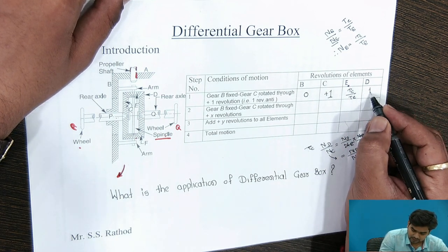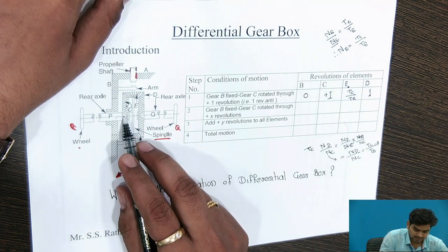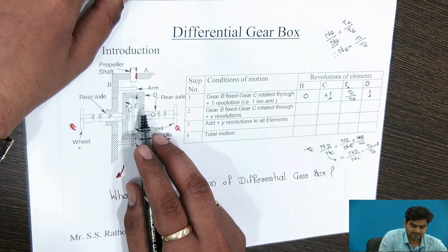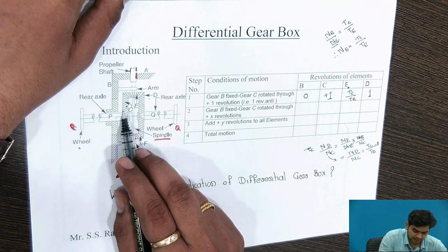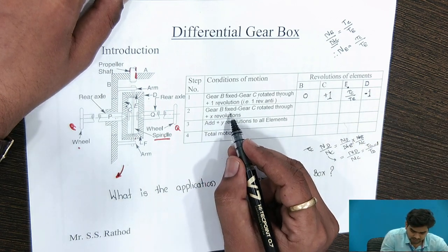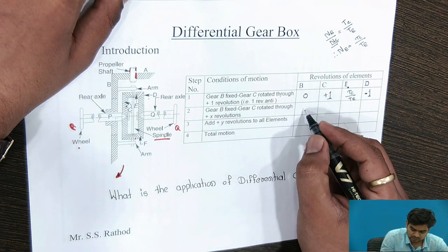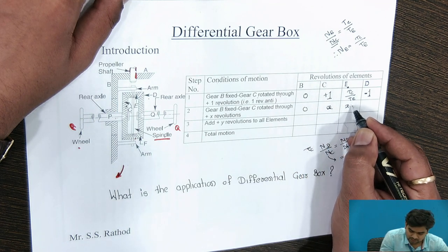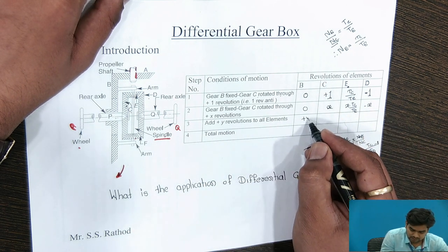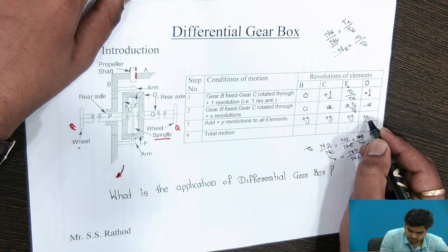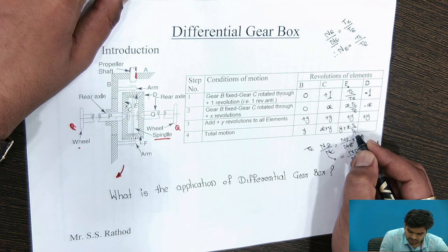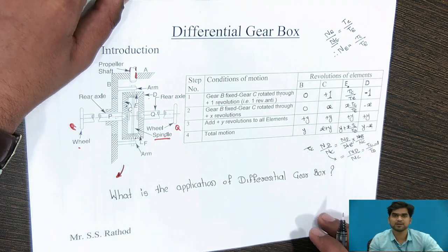Gear B is fixed and gear C rotates through plus X revolutions. As gear C makes X revolutions, multiplying through gives: E gets X·(TC/TE) and D gets minus X. Adding Y revolutions to each element gives the total motion table: gear B gets Y, gear C gets X plus Y, gear E gets Y plus X·(TC/TE), and gear D gets Y minus X. This is the table of motion.